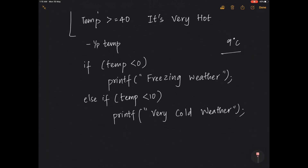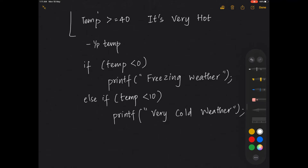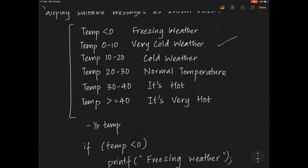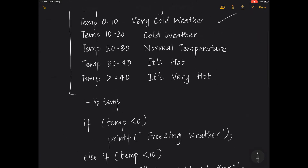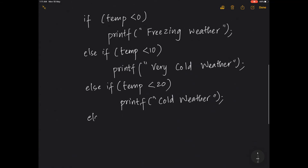All these times when you join conditions using a logical AND operator, you can shorten it this way. Do check if the program works, and you can continue. This method also applies to the electricity bill program. So: temperature less than 10 prints 'very cold weather', temperature less than 20 prints 'cold weather', and else-if temperature less than 30 prints 'normal temperature'.